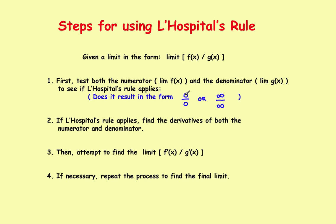We came up with a series of steps to get to the solution. First, test both the numerator and the denominator of the original function to see if you can put it in the form zero divided by zero or infinity divided by infinity. If it winds up in one of these two forms, the rule applies, and you can find the derivatives of both the numerator and denominator, then find the limit to get the solution.